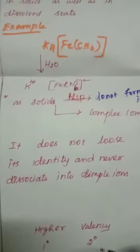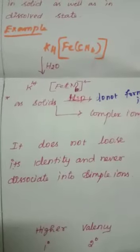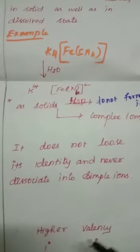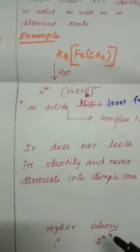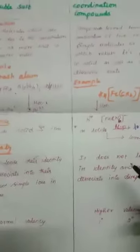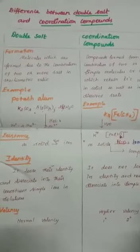Double salts have normal valency. Coordination compounds have higher valency and these metals have two kinds of valency: one is primary valency and secondary valency. So these are all the differences between coordination compounds and double salts.